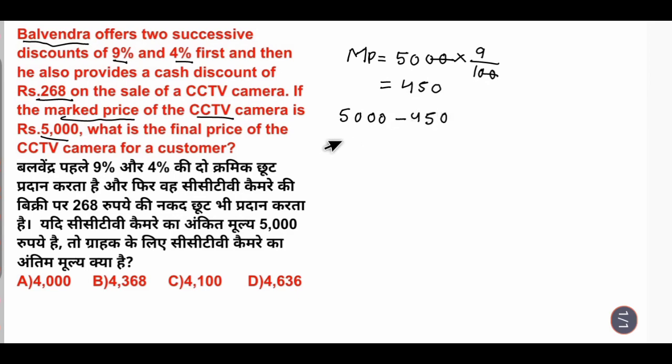Now Rs. 4,550 after Rs. 450 discount, this Rs. 4,550 after 9% discount. Now I have 4% discount. 4,550 times 4 divided by 100.